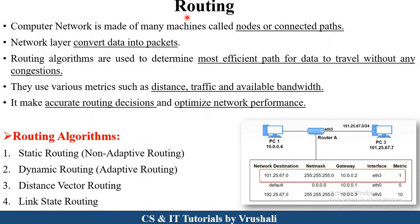The first point is: what exactly is routing? In computer networks, multiple devices are present and all these devices are connected with each other. They share packets and information with each other. There are routing algorithms used to find out the efficient path or shortest path between source and destination. They find out paths according to distance, traffic, and available bandwidth between devices.